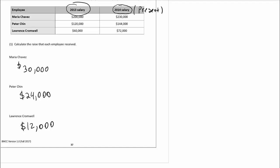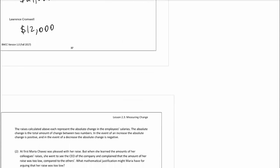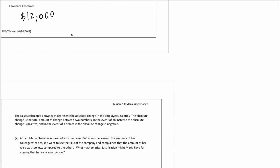When there's a change, there's a time that we're living right now — the present time — and then there's also the past. I like to describe the difference as the present minus the past, or what it is now minus the original. That term — when you subtract the two numbers — is called the absolute change. The absolute change is the total amount of change between the two numbers. In the event of an increase, the absolute change is positive; in the event of a decrease, it is negative.